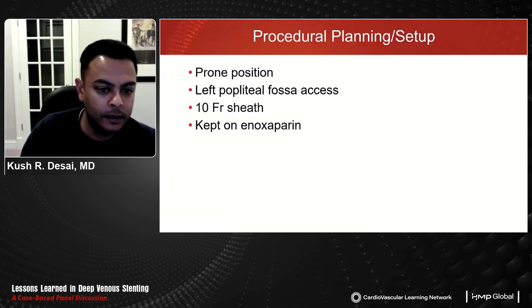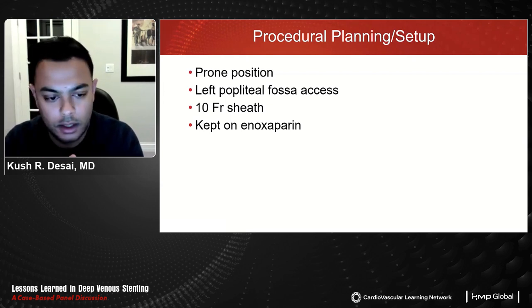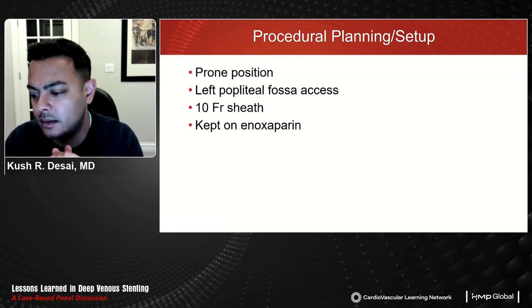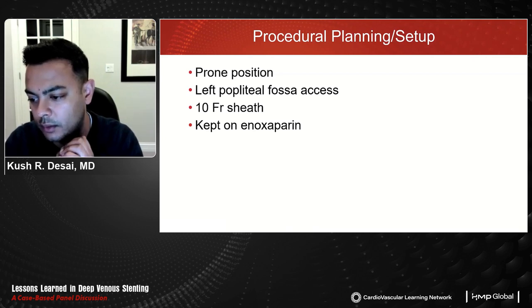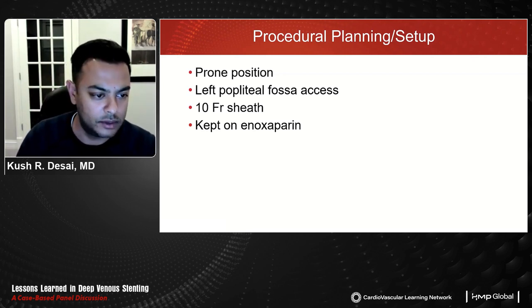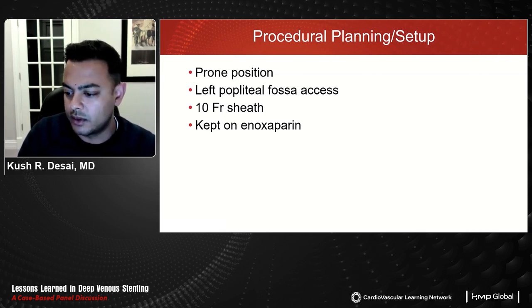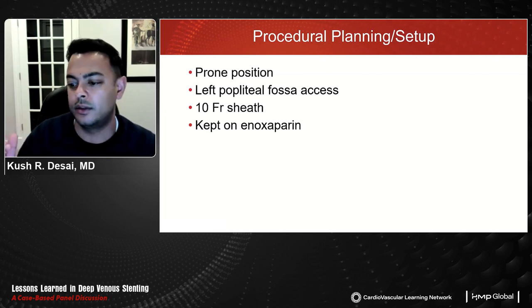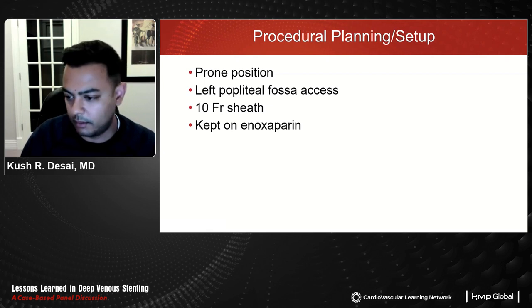Dr. Desai prefers to do these procedures prone, consistent with Dr. Black's earlier advice. Accessing from the common femoral vein or great saphenous vein would miss disease in the most critical segments — the common femoral vein, the profunda — and you want to clean out the fem-pop segment to optimize inflow. Popliteal fossa access is preferred, specifically small saphenous or posterior tibial access at the high calf, a few centimeters from the popliteal vein. A 10 French sheath provides broad compatibility with all devices — thrombectomy and stent — with options up to 16 French for clot capture devices.